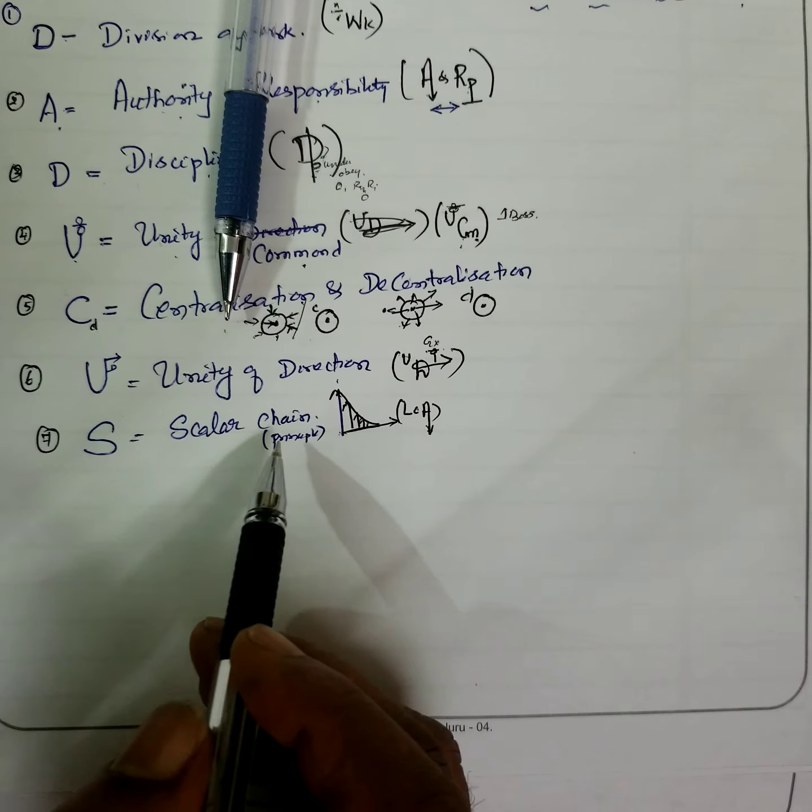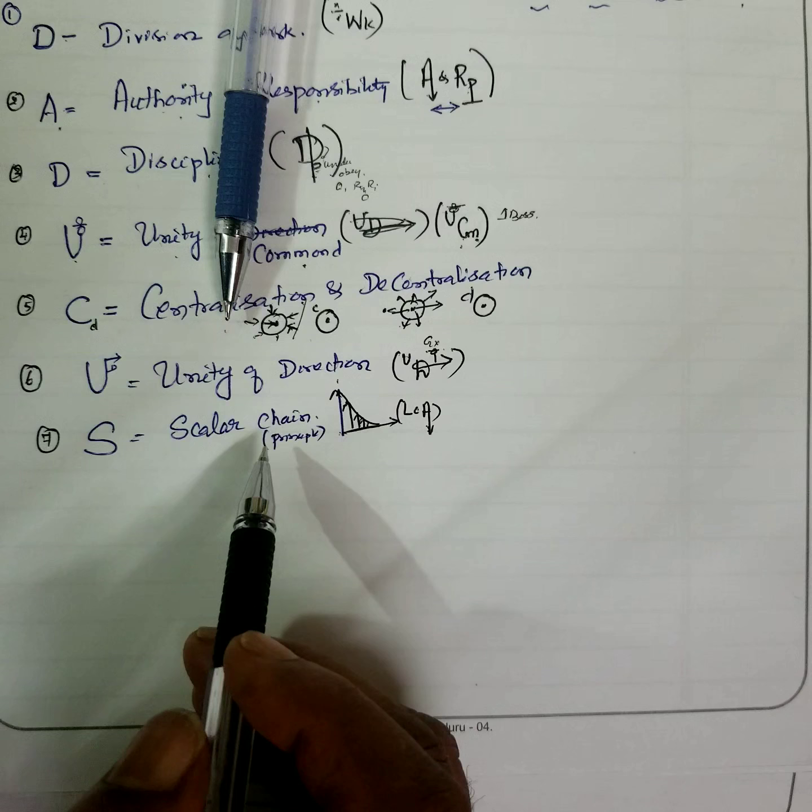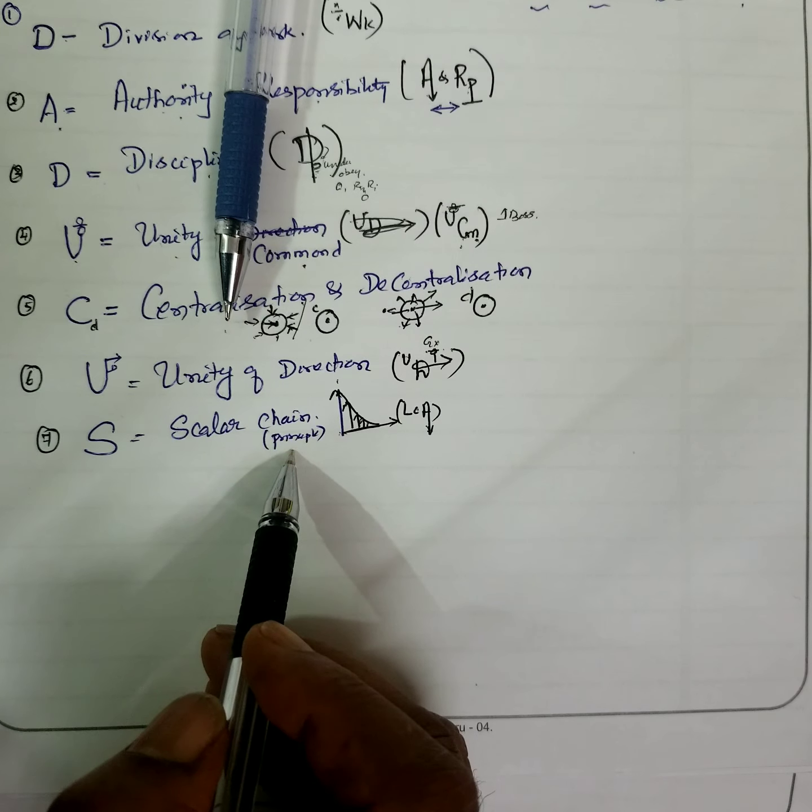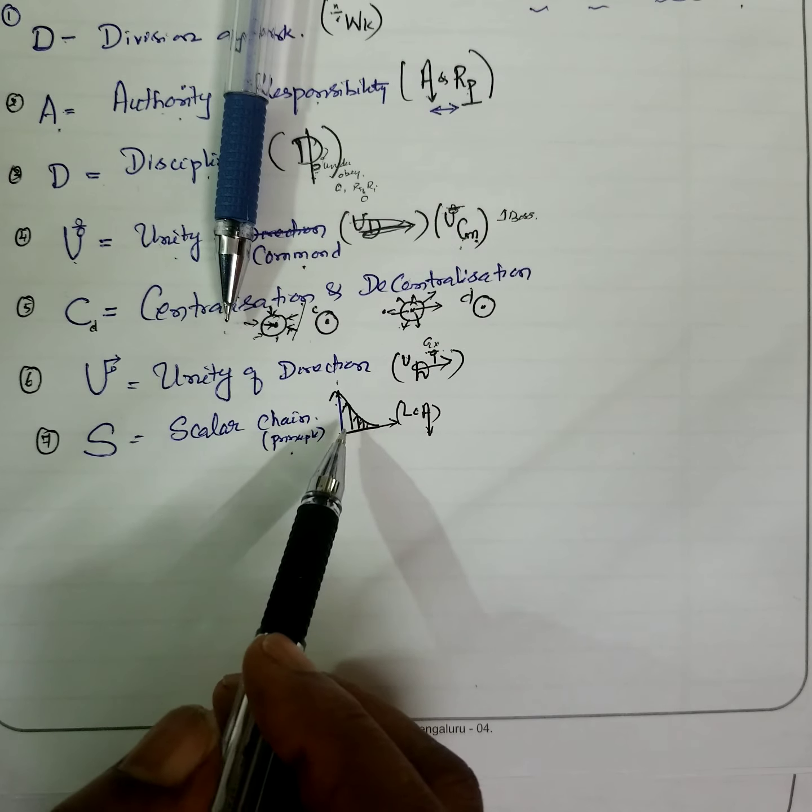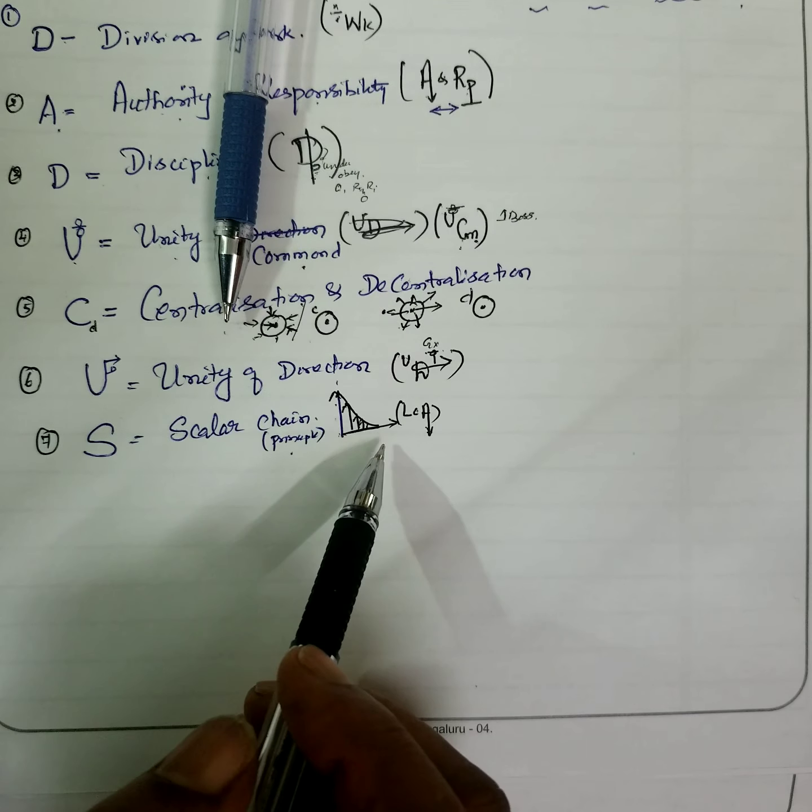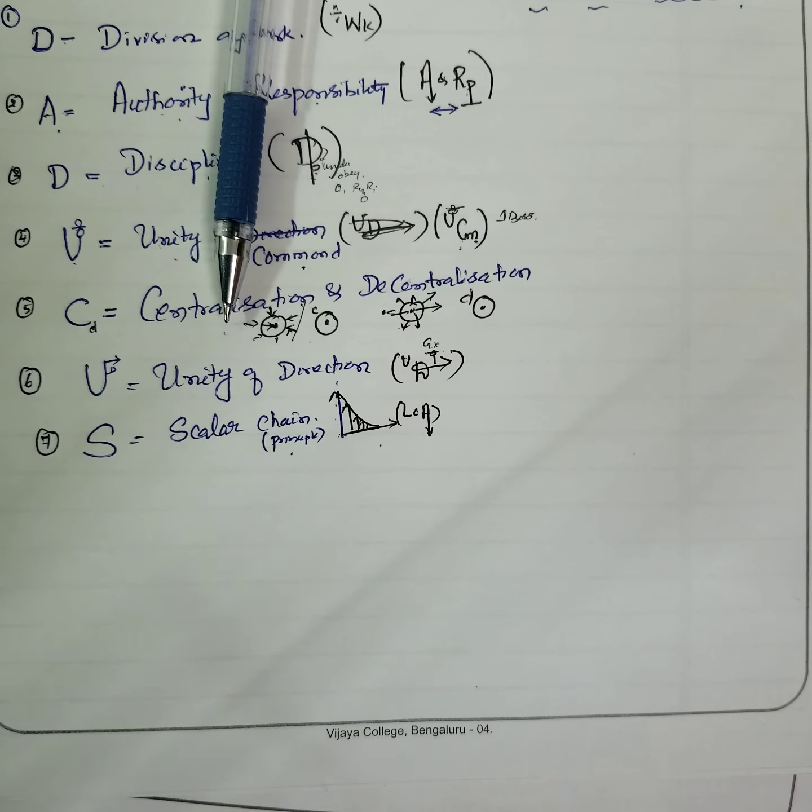S stands for scalar principle or scalar line of chain. It is a formal line of authority. Who is more powerful? Who is next powerful? Authority from higher to the lower rank is known as scalar chain.